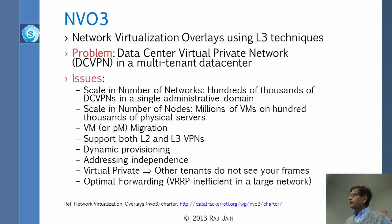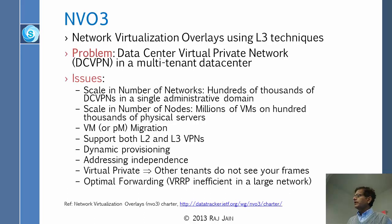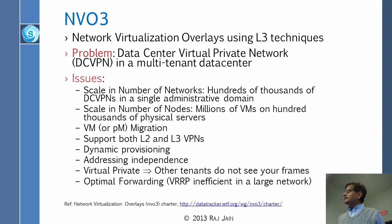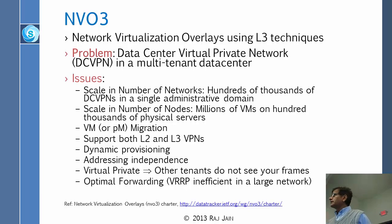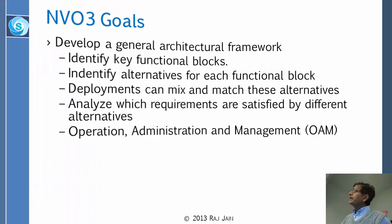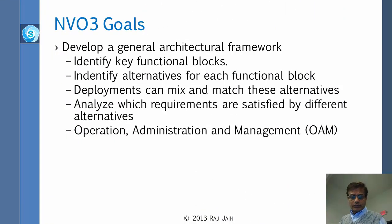VRP, the virtual routing protocol, relates to tromboning, where routing is not efficient — packets go to the wrong place across data centers. These are the things NVO3 is working to solve. The goal is to develop a general architectural framework, identify the key functional blocks, and identify alternatives for each functional block.